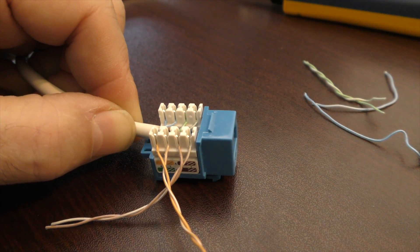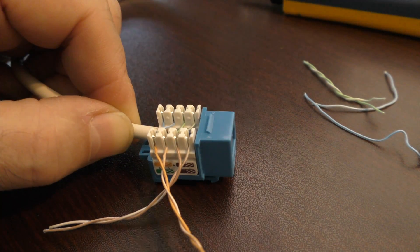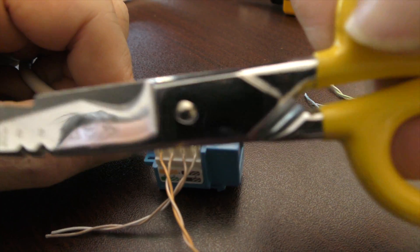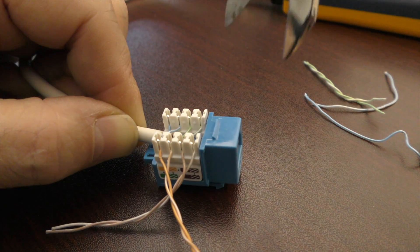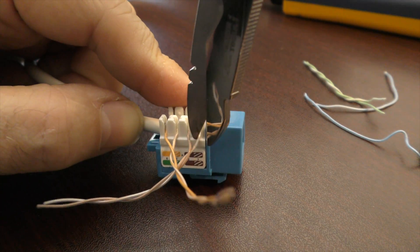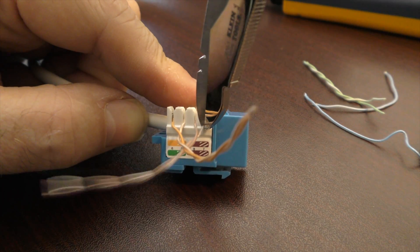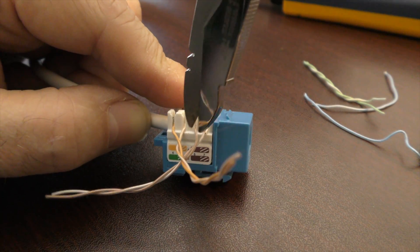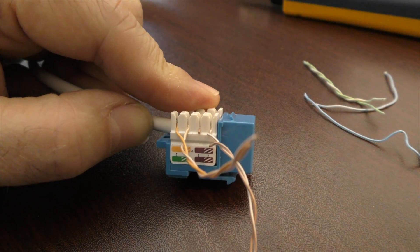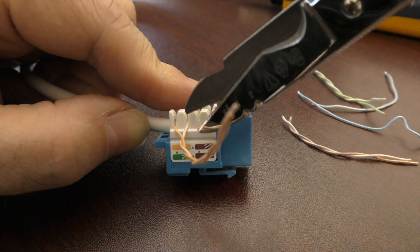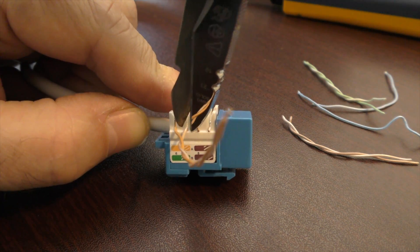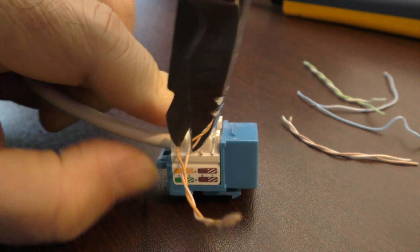So after you've got them in there, you come back behind with a pair of snips or electrician scissors. You're going to have to cut as close as you can—you don't want any excess hanging out over the edges of your jack because you don't want them to rub against anything and short out.